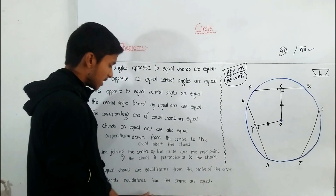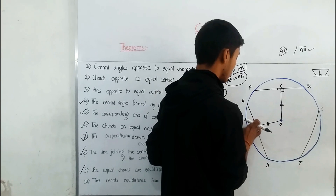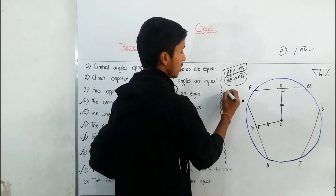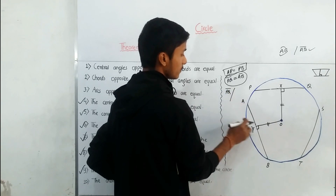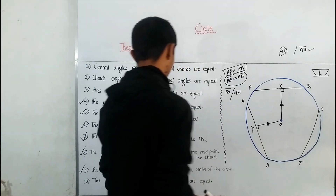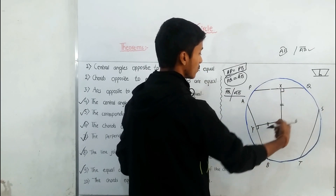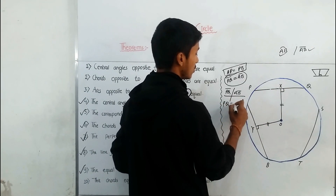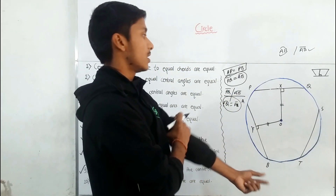Theorem 10 is the converse: chords equidistant from the center of the circle are equal. The given condition is that chords PQ and AB are equidistant, meaning OX is equal to OY. Therefore, chord PQ will be equal to chord AB — so chords equidistant from the center are equal.